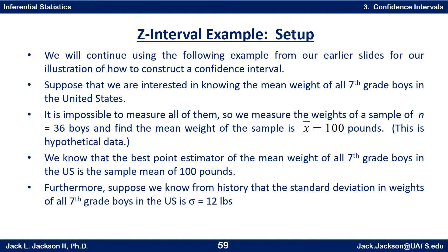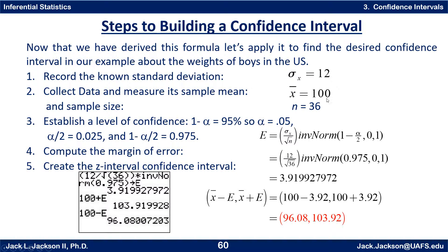We will use the following example to illustrate how to construct this confidence interval. We're looking at the weight of all 7th grade boys, and we want to find the mean weight of all 7th grade boys in the United States. Since it's impossible to measure all of them, we measure the weights of a sample of size n equals 36 boys, and we find the sample mean weight x-bar equals 100 pounds — remember, this is hypothetical data. We also know from history that the standard deviation in weights of all 7th grade boys is sigma equals 12 pounds. So: sigma of x is 12, x-bar is 100, n equals 36.